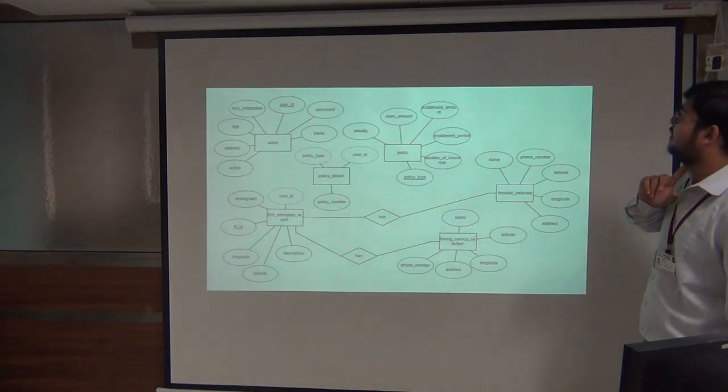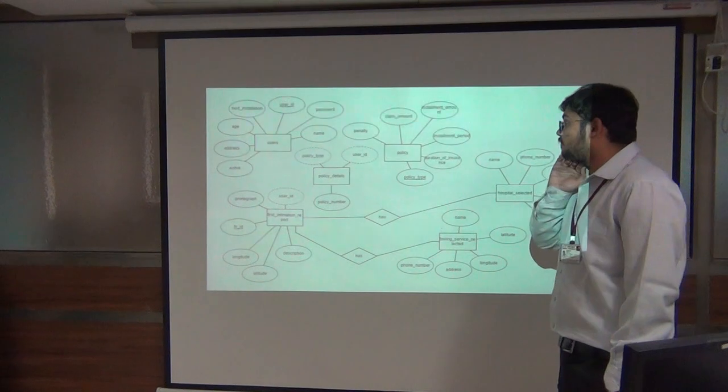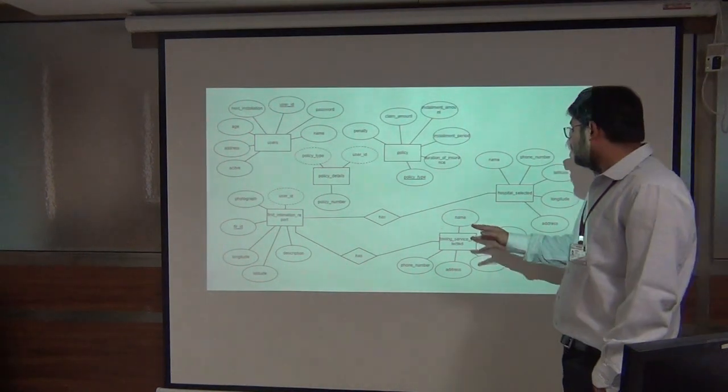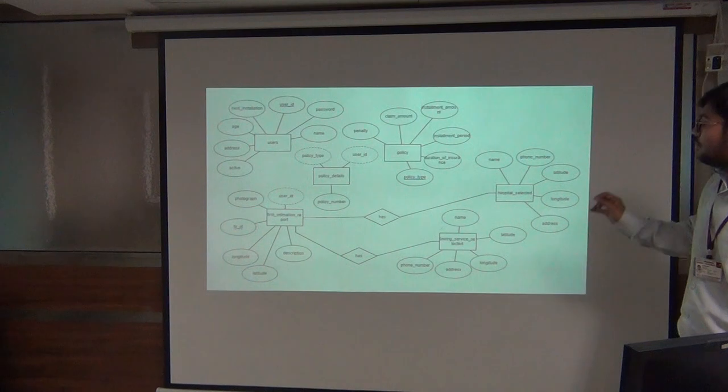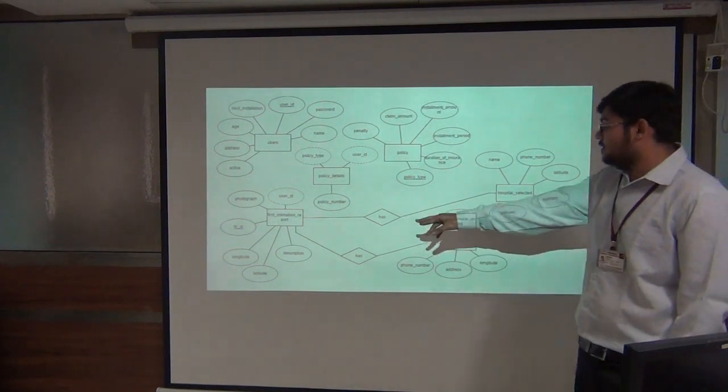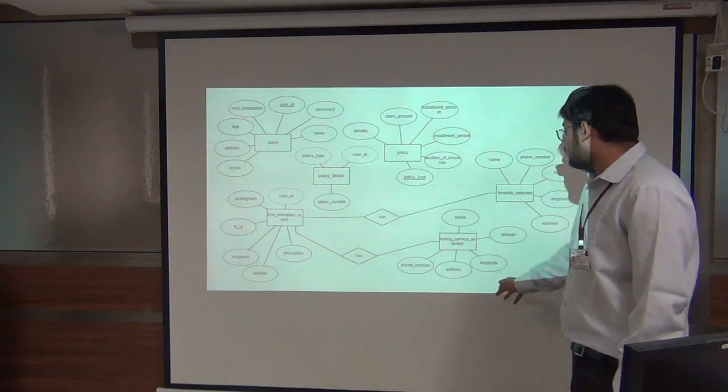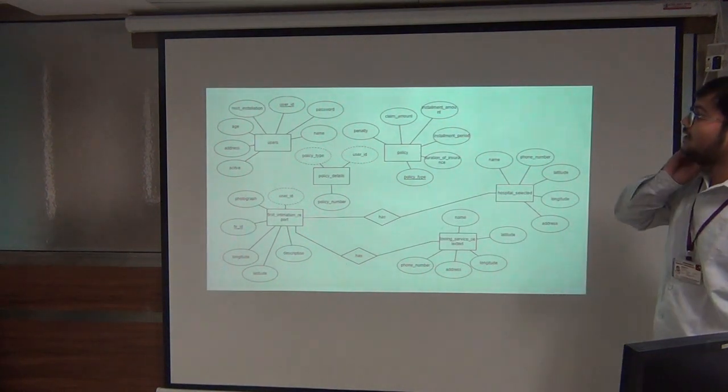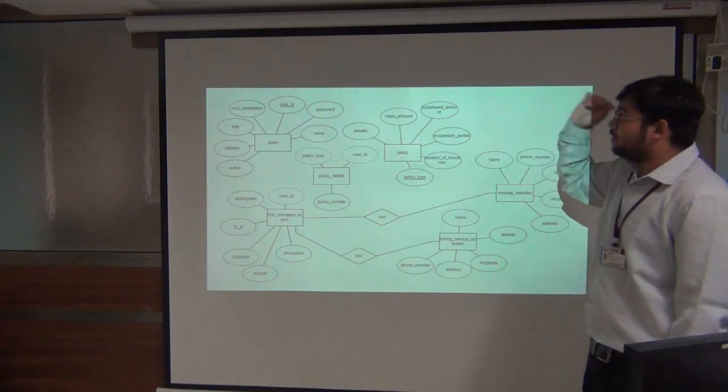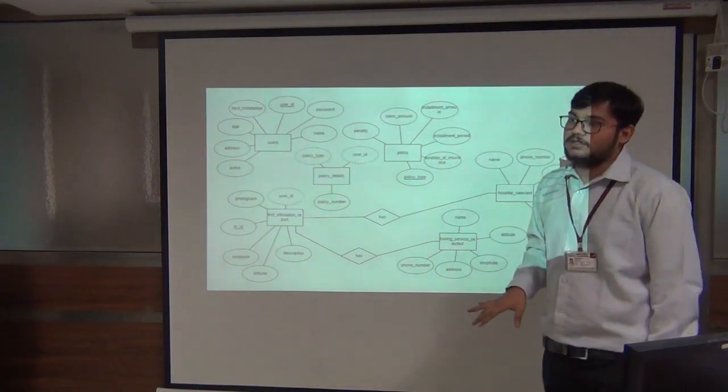This is the ER diagram. It consists of five entities: users, first information report, policy, tow service and hospital selected. As you can see the first information report contains the hospital selected and the tow service selected. And these are users, we are storing also the name and password for authentication of users.